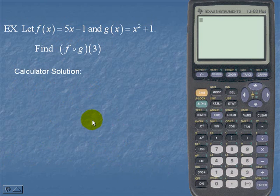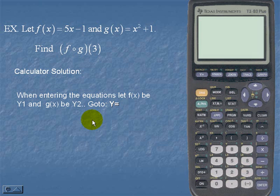Let's take a look at the calculator solution. When entering the equations, we're going to let f of x be y sub 1, and we're going to let g of x be y sub 2. So we should go to the y equals.